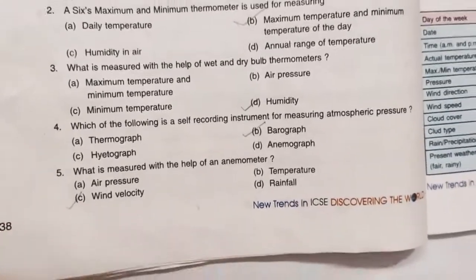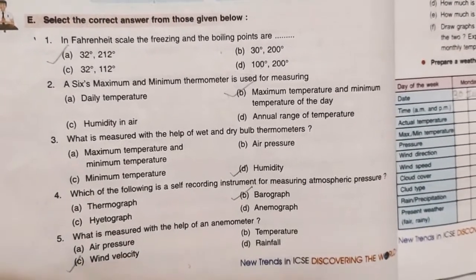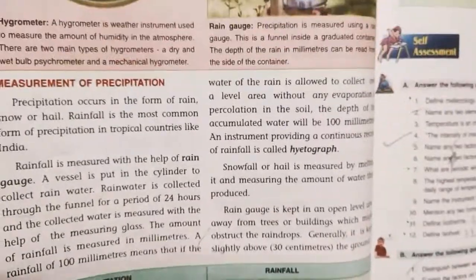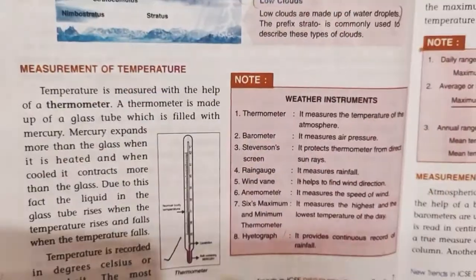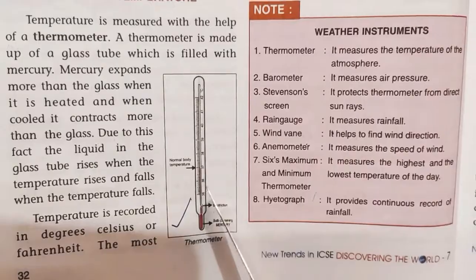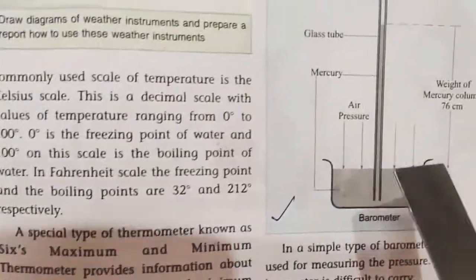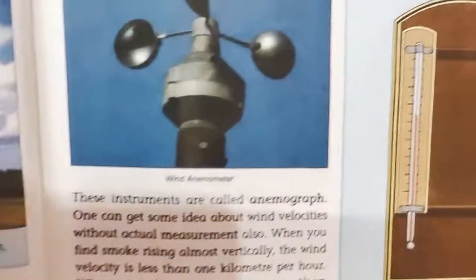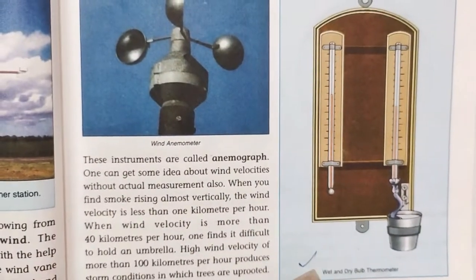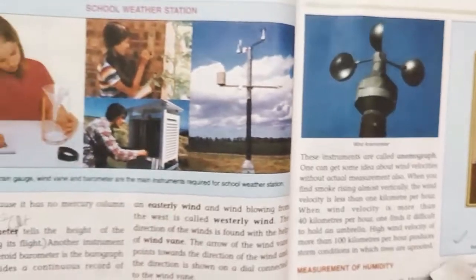That's all for today. Draw these diagrams also in your fair copy. Number 1: thermometer. Number 2: barometer. Number 3: wet and dry bulb thermometer. Thank you.